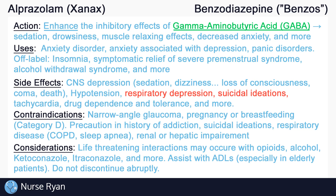Just some of the potential withdrawal symptoms include anxiety, insomnia, and even seizures. For treatment of overdose, a benzodiazepine antagonist such as flumazenil may be used as an antidote. Flumazenil blocks or inhibits GABA receptors, reducing the symptoms of overdose.